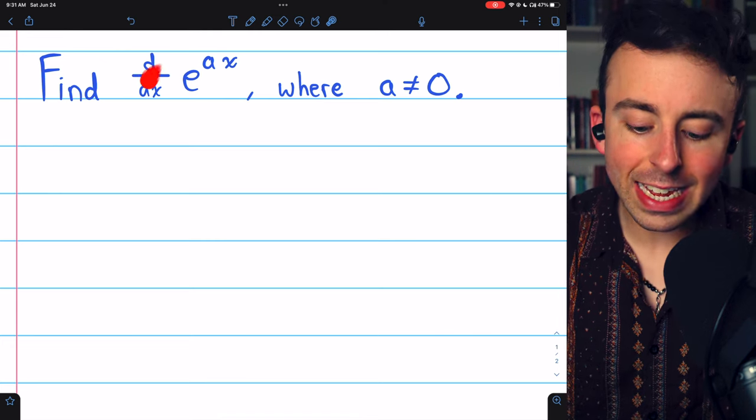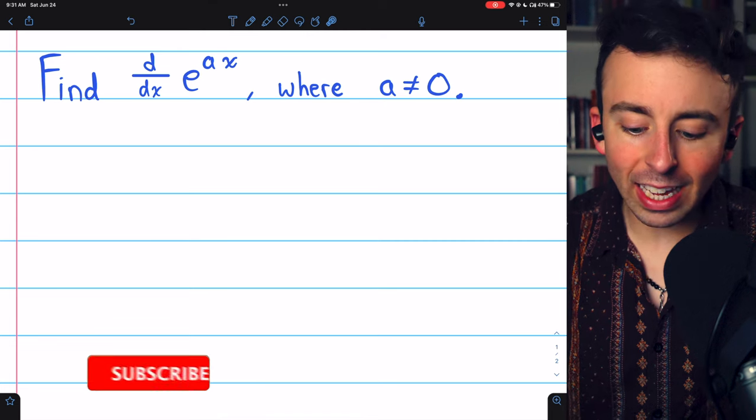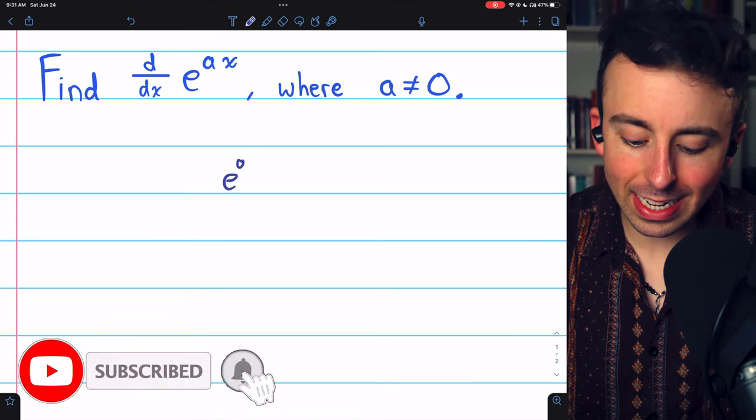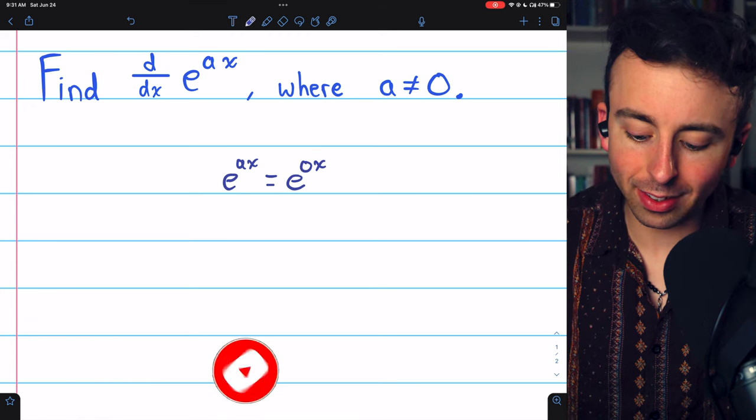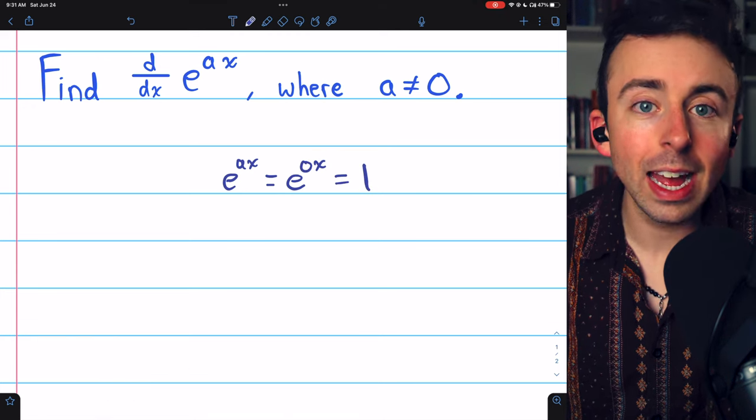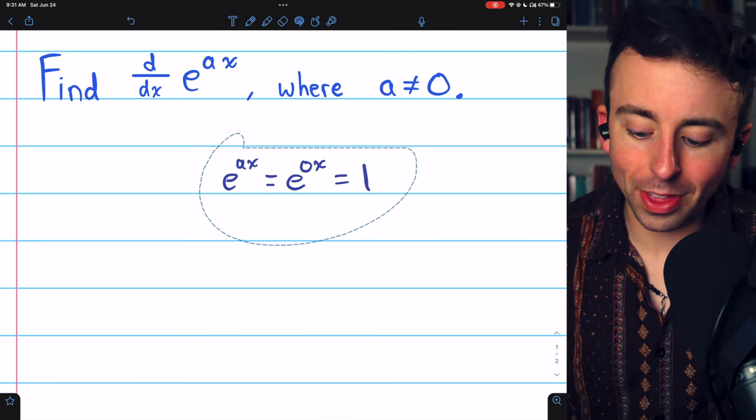How do we find the derivative of e to the ax for any real number a? Well, if a is 0, then e to the ax is equal to e to the 0x, which is just e to the 0, which is 1, and the derivative of that would be 0. So let's ignore that case.